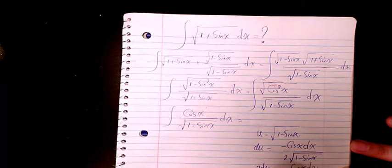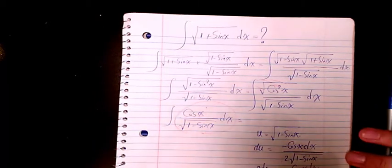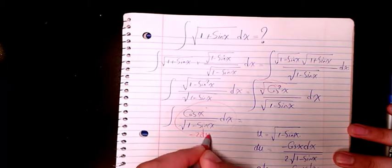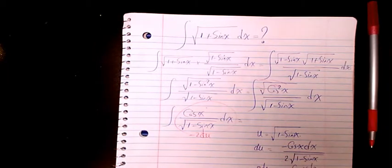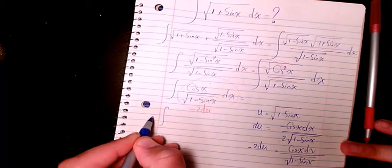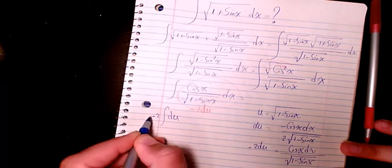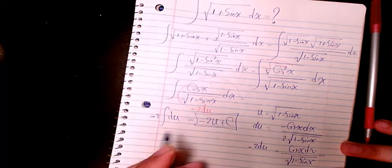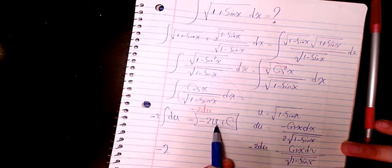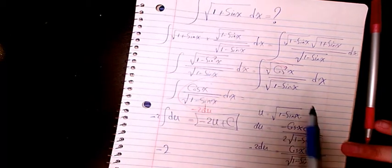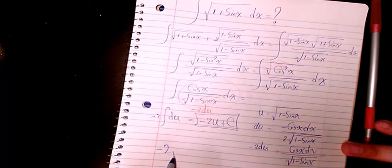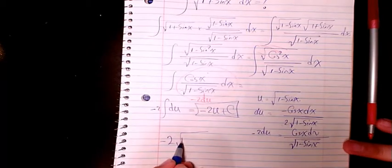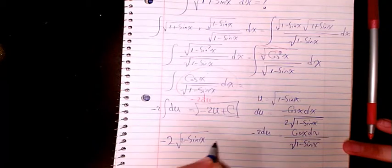So that changes to negative two du. The integration will be negative two du, which makes it negative two u plus c. That's the final answer. I just need to change u back to the original, which is square root of one minus sine x plus c.